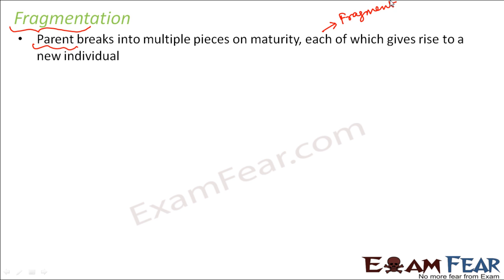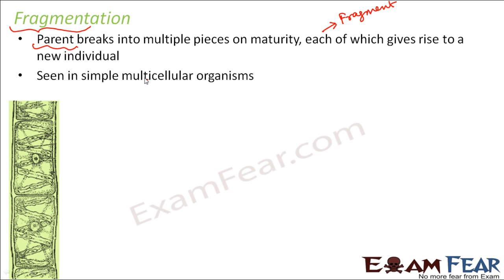In fragmentation, this breaking happens on its own as soon as the organism becomes matured — it by itself breaks into different fragments. This is seen in simple multicellular organisms. It would be too much to expect this process for all multicellular organisms, because complex multicellular organisms are not just a collection of cells. They have division of labor: cells group to form tissues, tissues form organs, and organs form organ systems.